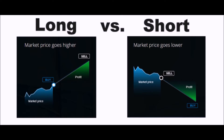Let's explain what long and short positions are. When trading futures contracts, you make a contract with the exchange about the future price of Bitcoin or any other currency. When you open a long position, you buy the cryptocurrency at a certain price hoping the price will increase, then you sell it at a profit. When you open a short position, you sell Bitcoin at a certain price level hoping the price will decrease, and once that decrease happens you buy it back and take the profit.